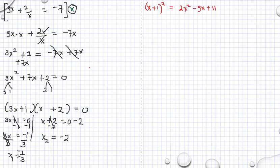Another example that I found in a book. It says x plus 1 parenthesis squared is equal to 2x squared minus 5x plus 11. What we need to do is expand this first, because we cannot do anything else. The first thing is to expand. Then we have x squared plus 2x plus 1, using the special product formula, is equal to 2x squared minus 5x plus 11.